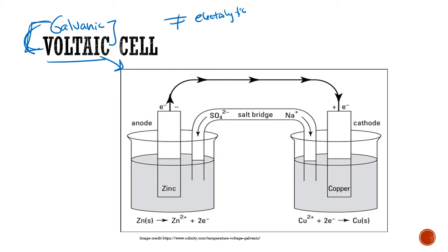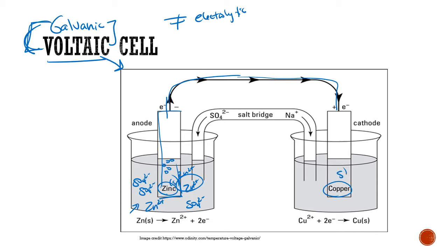In this example I have a solution of zinc sulfate, so the solution has zinc ions and sulfate ions floating around. We also have a solid piece of zinc metal — lots of zinc atoms here, zinc ions in solution. We have a wire connecting the two electrodes. On the other side, I have a solid piece of copper — neutral copper atoms — in a solution of copper sulfate, so copper ions and sulfate ions are floating around in that solution.